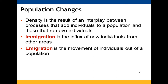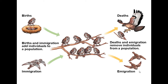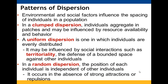Density is an interplay between when individuals are added to and removed from populations. This can happen through immigration, where new individuals enter, and emigration, where individuals move out. It can also happen through birth and death. Birth and immigration add individuals to your population, while death and emigration remove them.